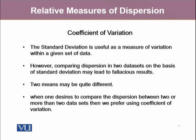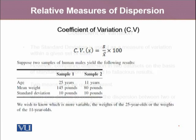The last relative measure of dispersion is the coefficient of variation, which uses the standard deviation. Standard deviation is useful as a measure of variation within a given data set, but if we need to compare two different data sets, it is not quite helpful — it can give misleading comparisons. Therefore, when comparing two or more data sets, we do not prefer standard deviation but instead work with the coefficient of variation.